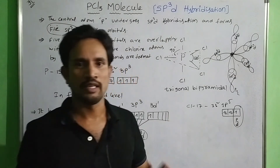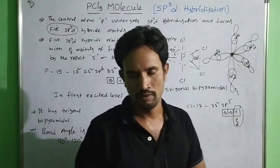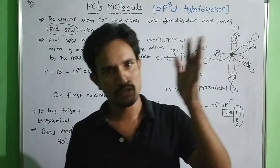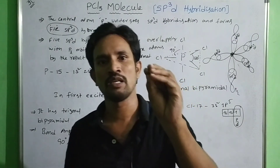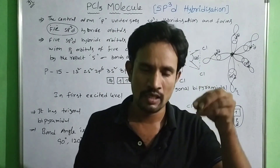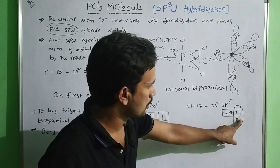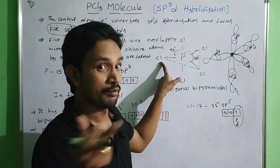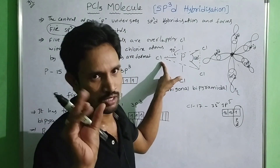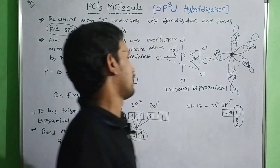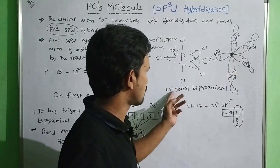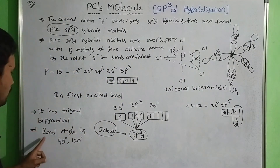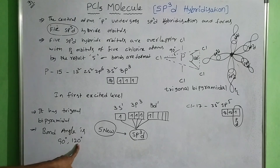To summarize the explanation of PCL5: in PCL5, the central atom is phosphorus, it undergoes sp3d hybridization, and forms 5 sp3d hybrid orbitals. These 5 sp3d hybrid orbitals are overlapping with the pz orbitals of 5 chlorine atoms, and by the result, 5 sigma bonds are formed. The shape of the molecule is trigonal bipyramidal, and the bond angle is 90 degrees and 120 degrees.